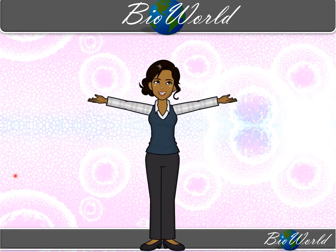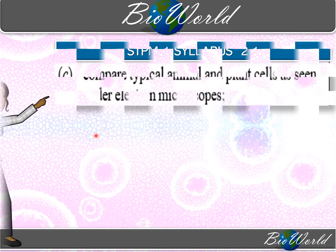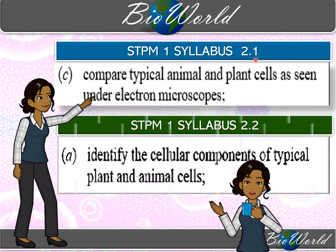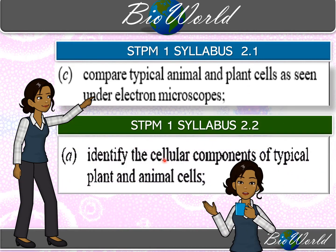Hello, welcome back to BioWorld. Today we are going to compare typical animal and plant cells as seen under an electron microscope according to syllabus 2.1, and we are going to identify cellular components of typical plant and animal cells as required in syllabus 2.2. So let's begin.